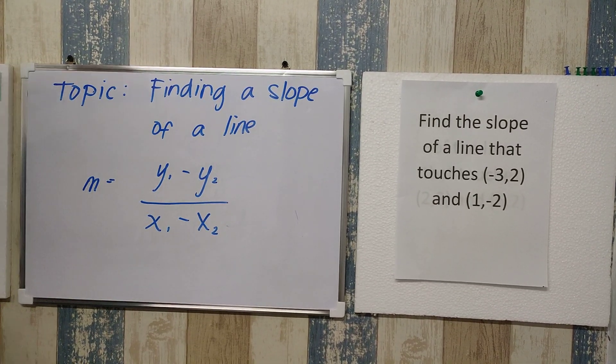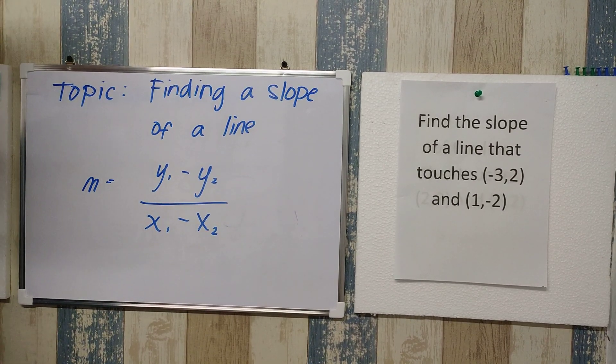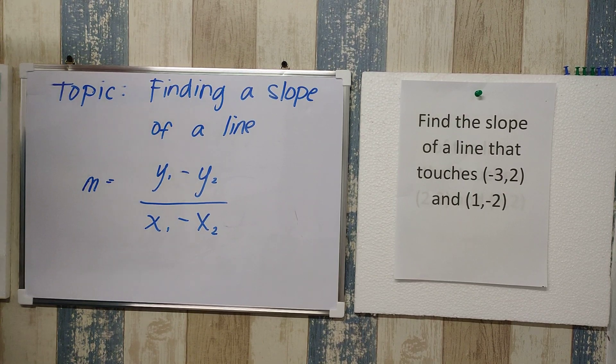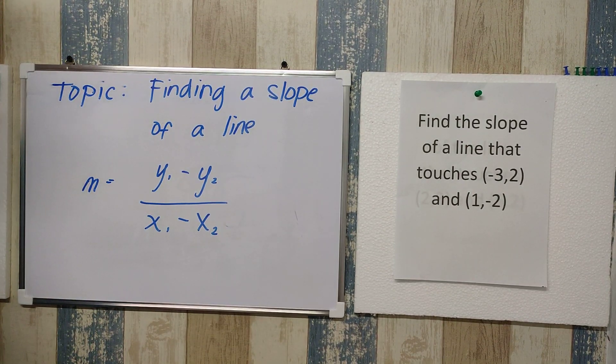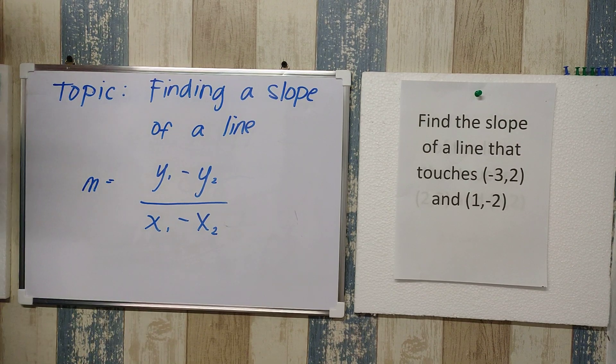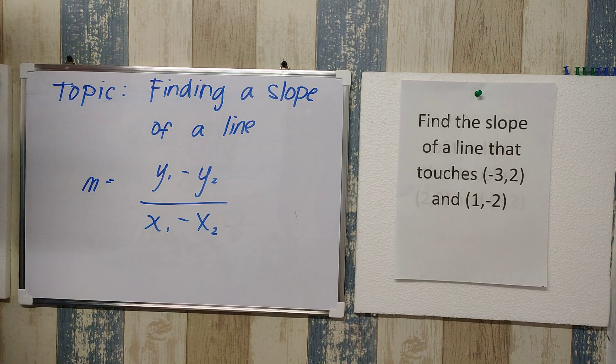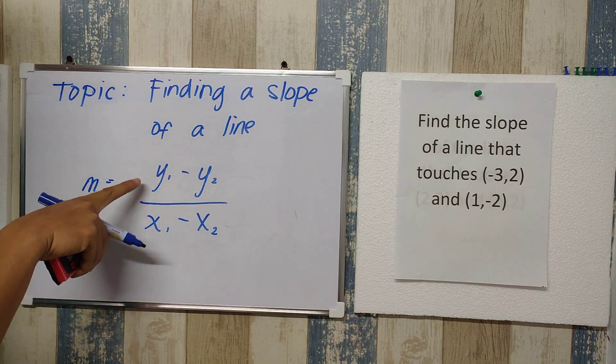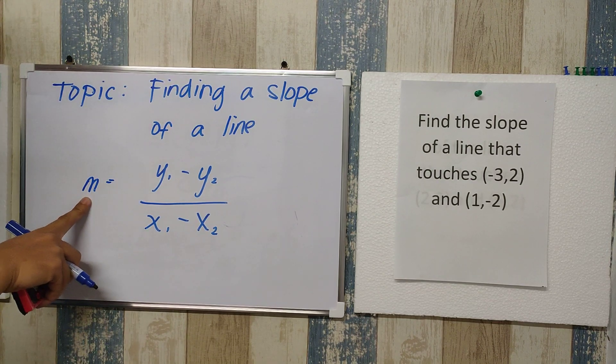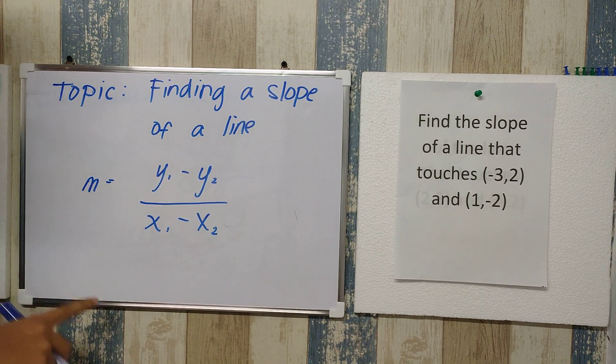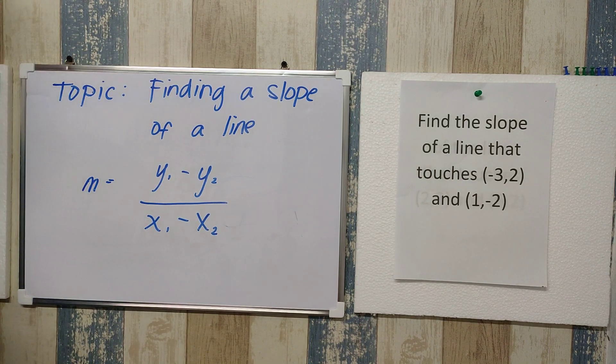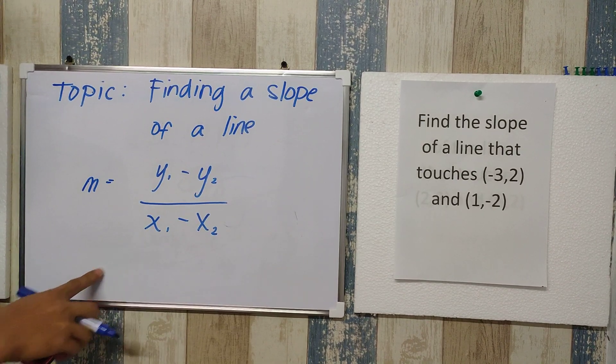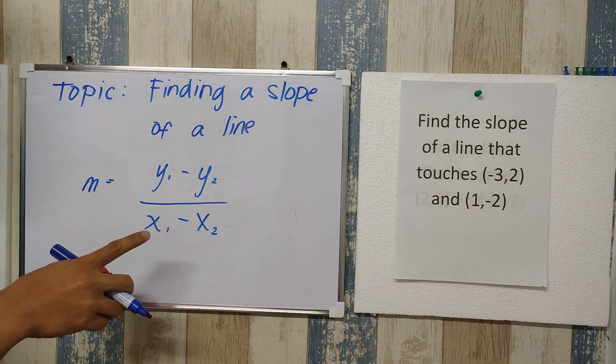All right, let's start. Our first topic for this third quarter exam is finding the slope of a line. Here we have a formula that we derive from getting the definition of the slope, which is the ratio of the rise to the run. So m, which is the slope, is equal to y sub 1 minus y sub 2 over x sub 1 minus x sub 2. It's not really hard to memorize this one. Sa taas yung y, sa baba yung x.